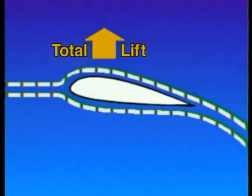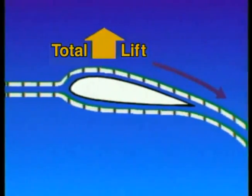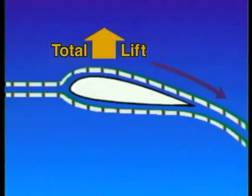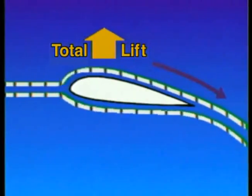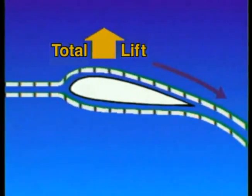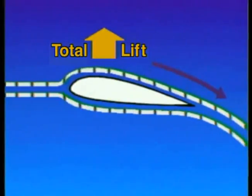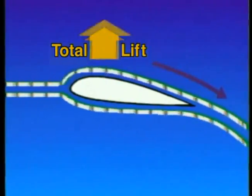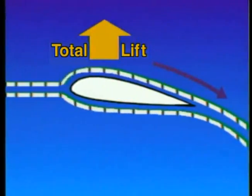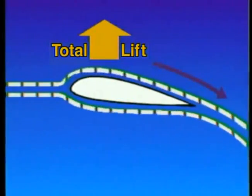The remaining lift is provided by the downward-backward flow of air generated from the top surface of the wing. The lift provided by this flow can be explained by Newton's third law of motion, which states that for every action, there is an equal and opposite reaction. The reaction to this downwash results in an upward force on the wing and an increase in total lift.